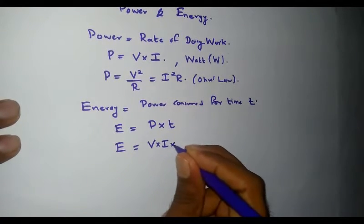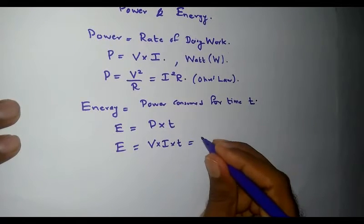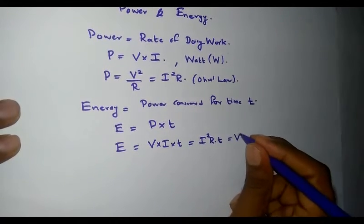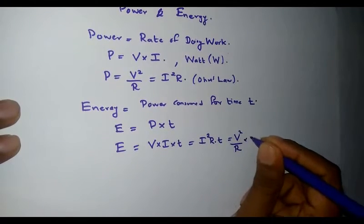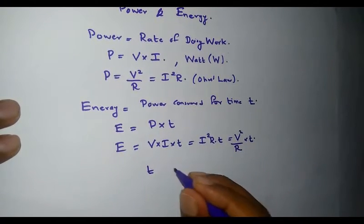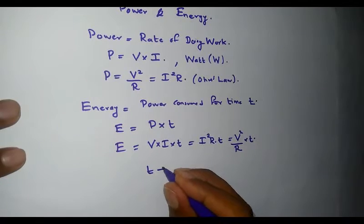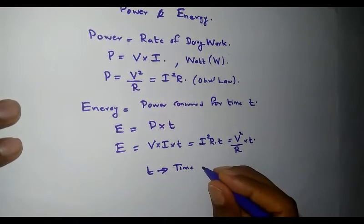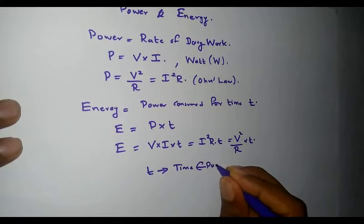It can be represented as E = V × I × T, or E = I² × R × T, or E = V²/R × T, where T is the time for which the power is consumed.